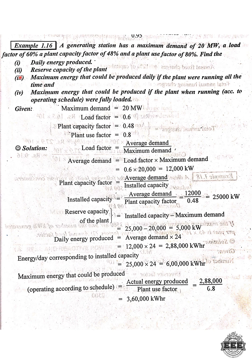Hello guys and welcome to the channel. So power system operation and control, unit 1, we have a problem. The question is: a generation station has a maximum demand of 20 megawatts, a load power factor of 60%, a plant capacity factor of 40%, and a plant use factor of 80%. Find the solution by substitution.